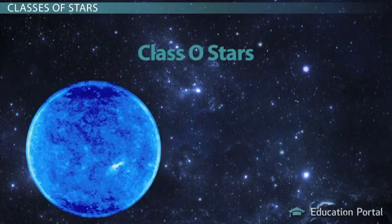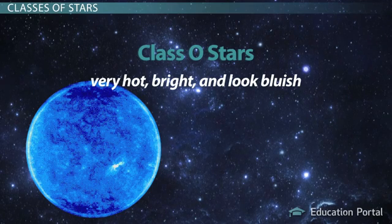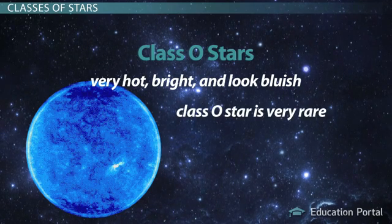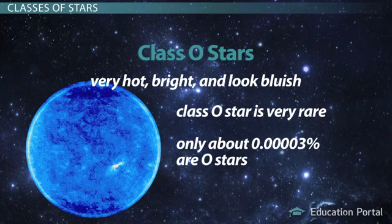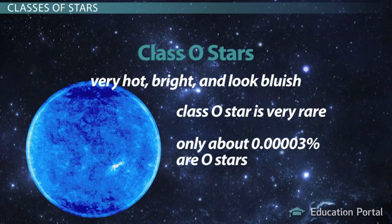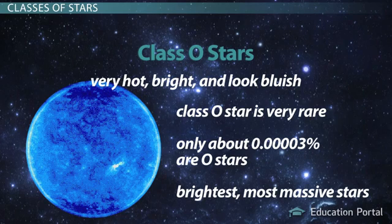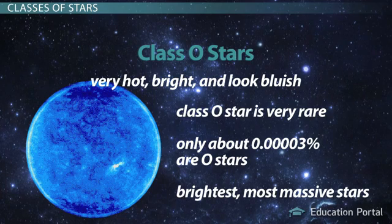Class O stars are very hot, bright, and look bluish. The Class O star is very rare. Only about .00003% of main sequence stars are O stars. These are also some of the brightest, most massive stars in the sky, shining with over a million times the power of our sun.